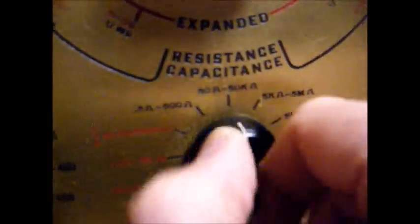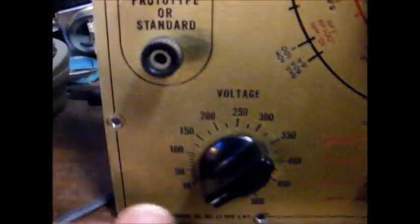And to check for leakage, we just rotate this knob over to where it says paper and mica test, and we'll rotate our voltage. And this eye should close briefly and then jump back open for a good capacitor. I'm rotating the voltage control up towards 500.